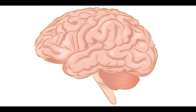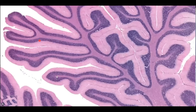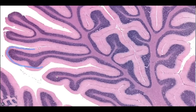Here we see our first histology slide. Notice we have raised ridges — each raised ridge is a folium — and then the invagination is the sulcus. So we have these raised ridges (the folia), going down into the sulcus, then another folium and another sulcus, and so on.